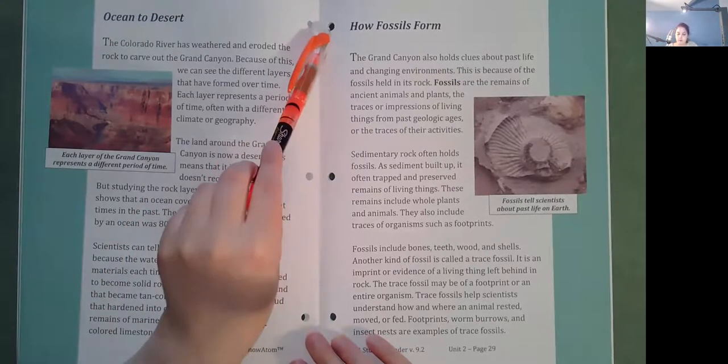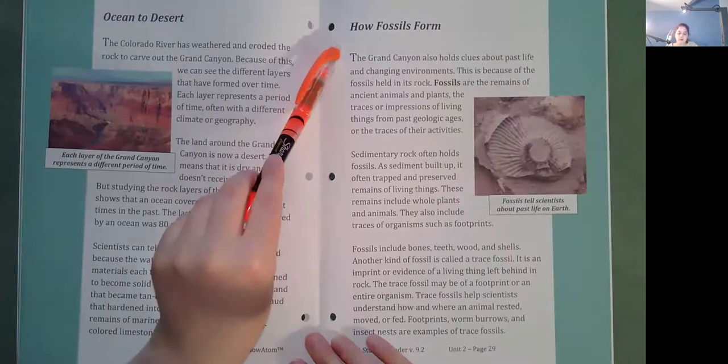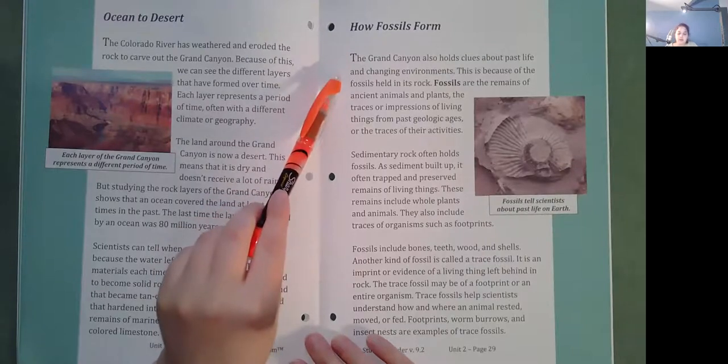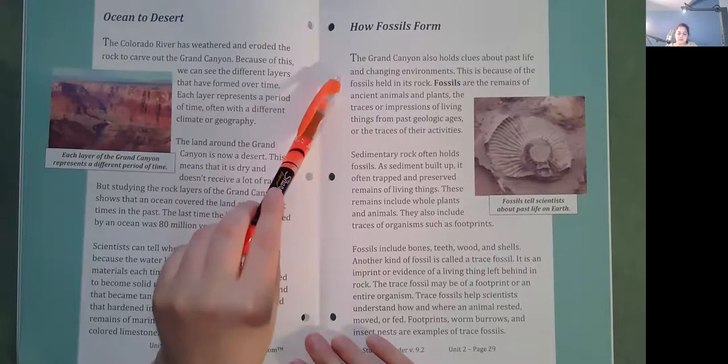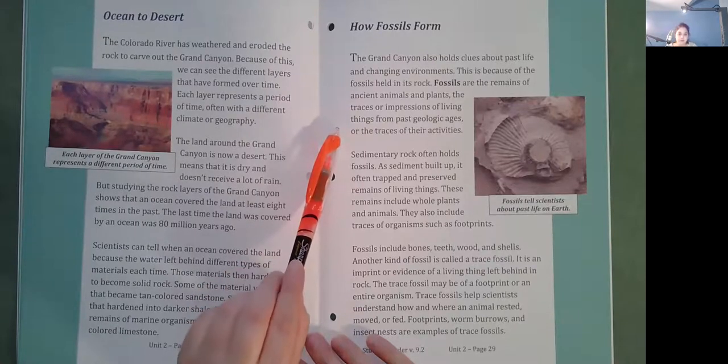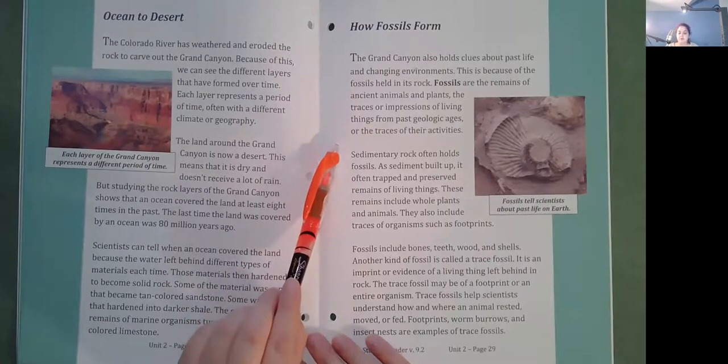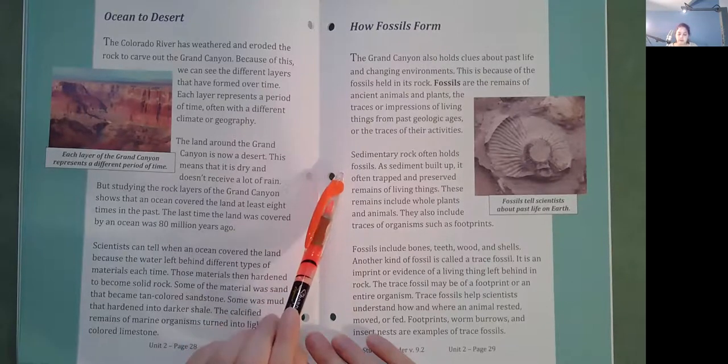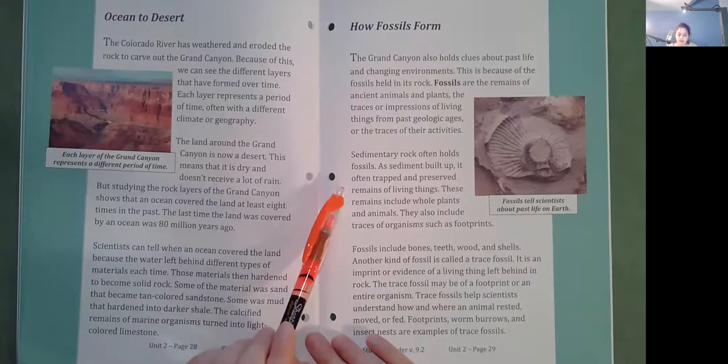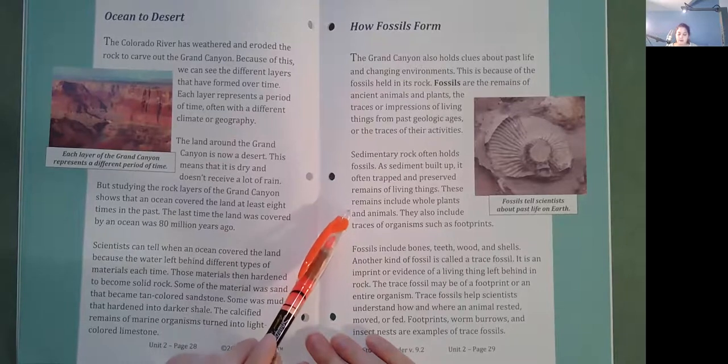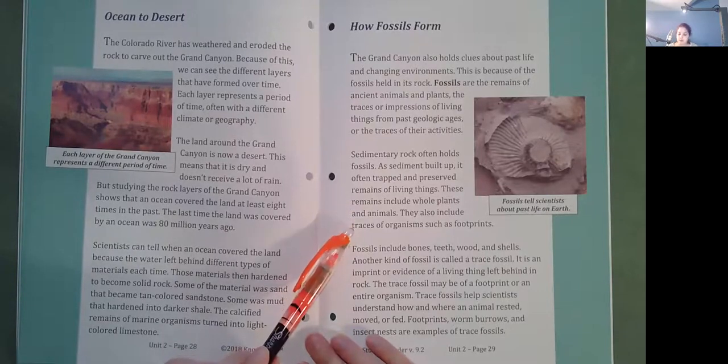How fossils form. The Grand Canyon also holds clues about past life and changing environments. This is because of the fossils held in its rock. Fossils are the remains of ancient animals and plants, the traces or impressions of living things from past geologic ages or the traces of their activities. Sedimentary rock often holds fossils. As sediment builds up, it often trapped and preserved remains of living things. These remains include whole plants and animals. They also include traces of organisms such as footprints.